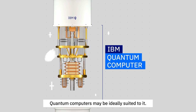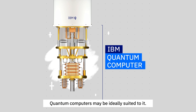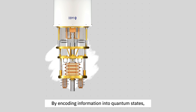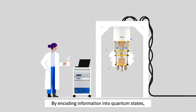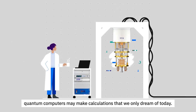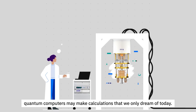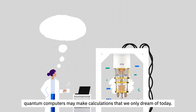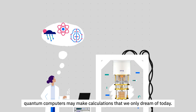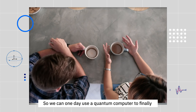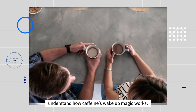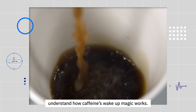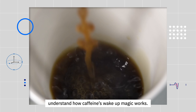Quantum computers may be ideally suited to it. By encoding information into quantum states, quantum computers may make calculations that we only dream of today. So we could one day use a quantum computer to finally understand how caffeine's wake-up magic works.